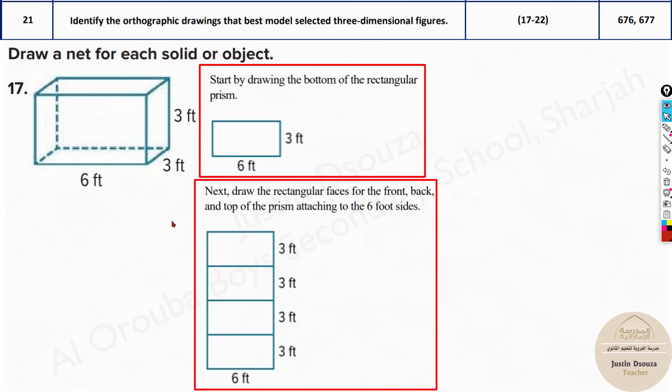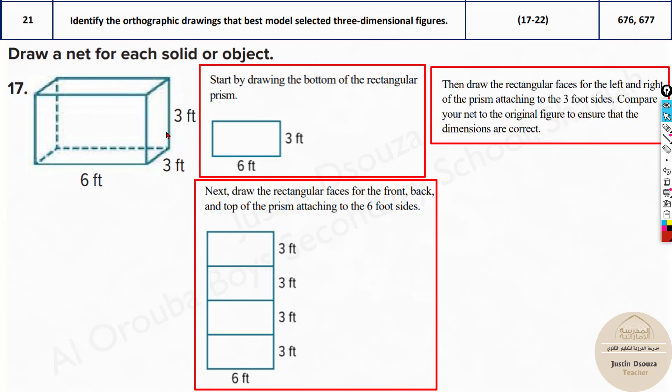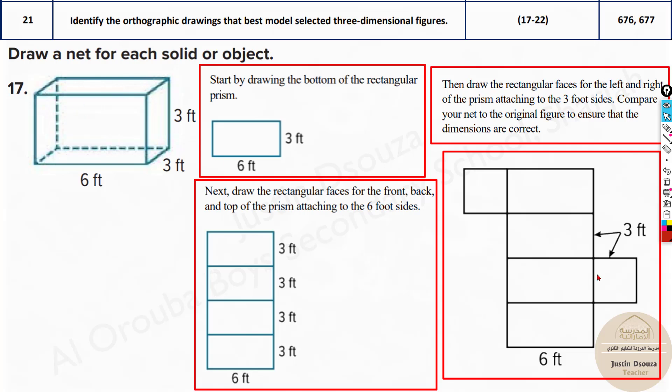Now let's see the actual drawings. You can see the base over here is six and three feet. And then you can open up all the other surfaces. These are all the rectangular surfaces. And then you can add up the sides, the square sides. So this is how we get the net for any solid object.